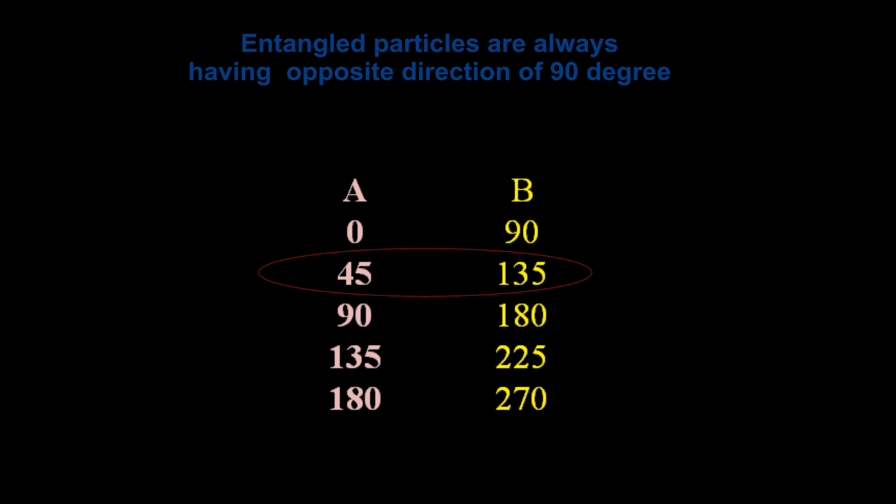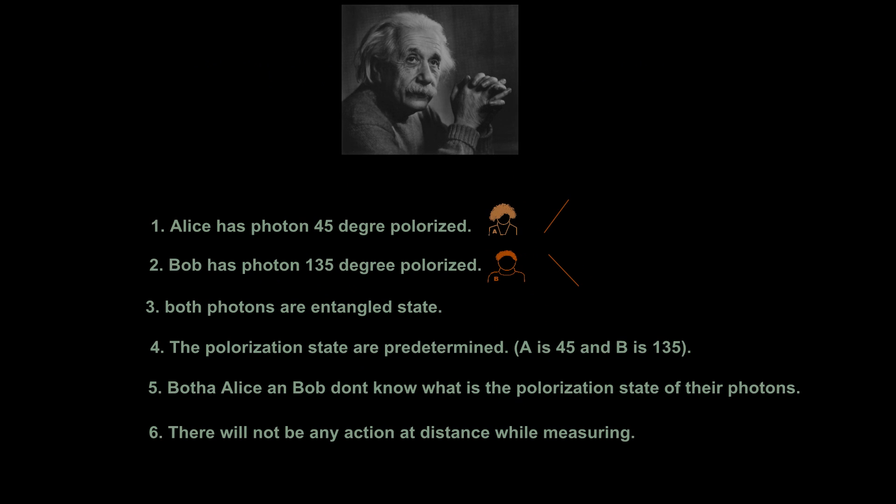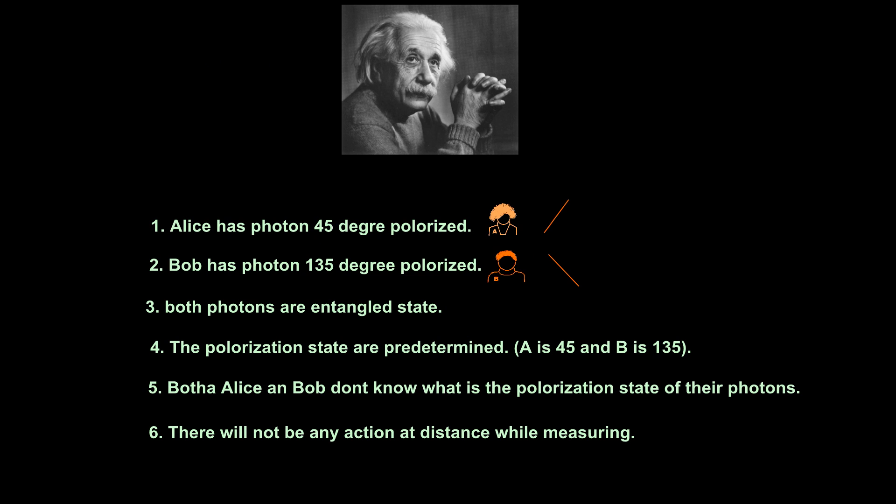Suppose A is 45 degree. What should be B? B should be 135 degree. Right? Now these are the scenarios as per Albert Einstein's view. Alice has photon 45 degree polarized. Bob has photon 135 degree polarized. Both photons are entangled state. The polarization states are predetermined. Both Alice and Bob don't know what is the polarization state of their photons. And there will not be any action at distance while measuring one photon.